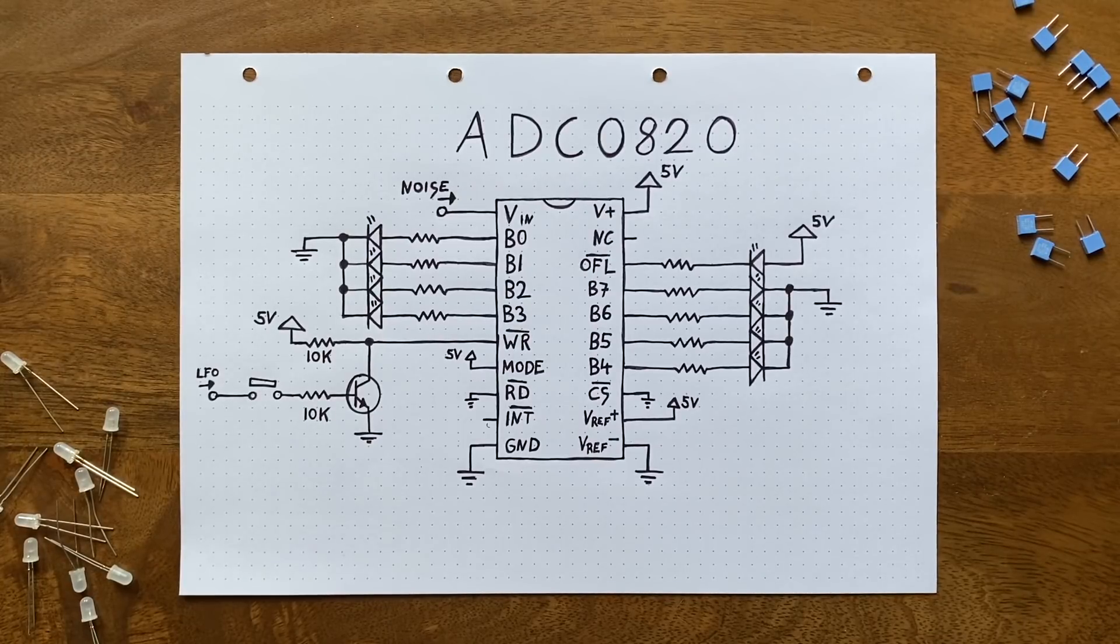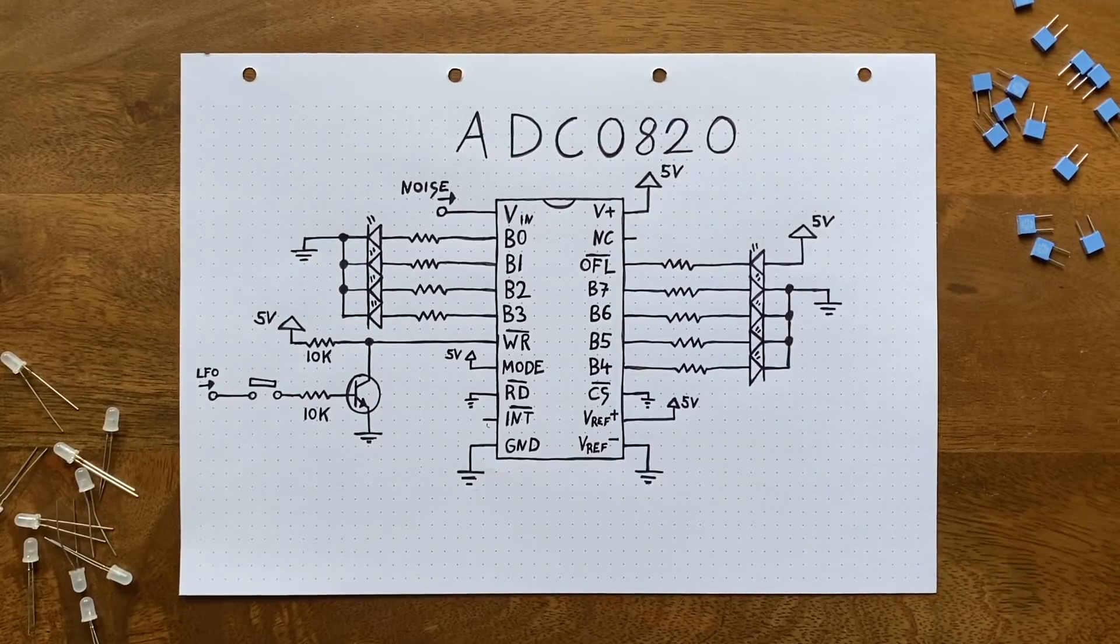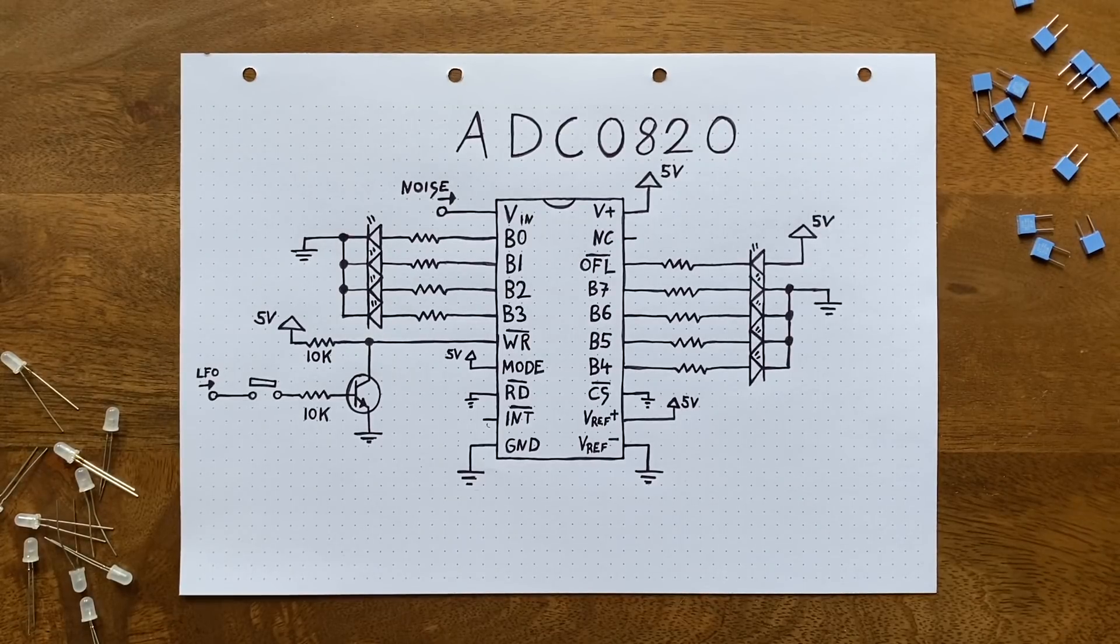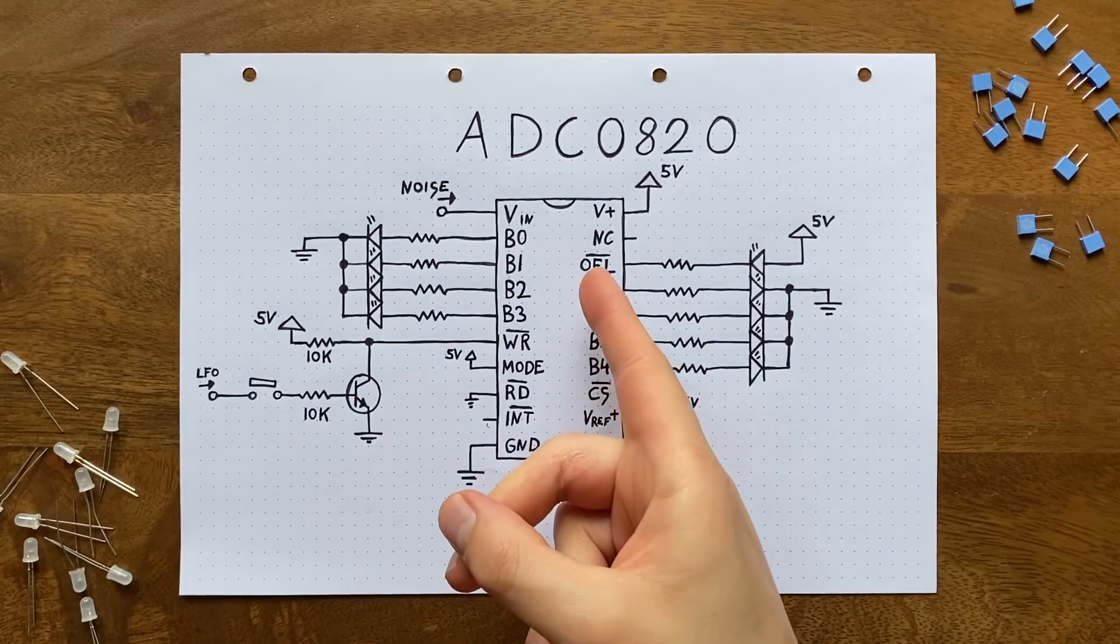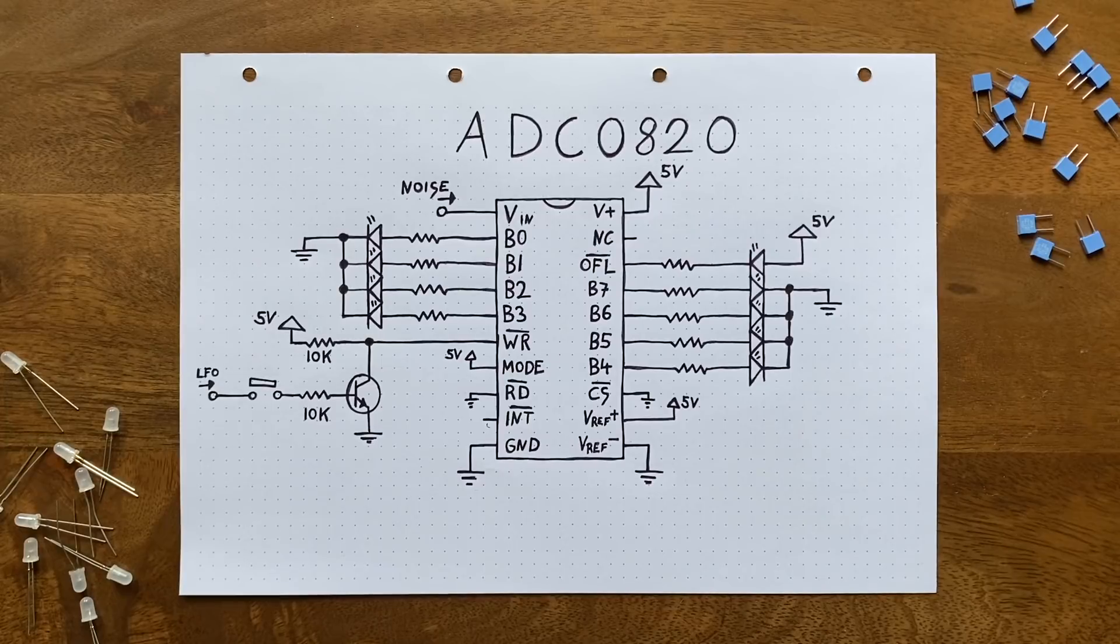The only slight problem is that there are way more entries in the giveaway than there are numbers in an 8-bit space: 508 versus 256. So we'll have to get a bit creative. Thankfully, our chip here has something called an overflow output. This is normally used to chain multiple ADCs to pass data between them.